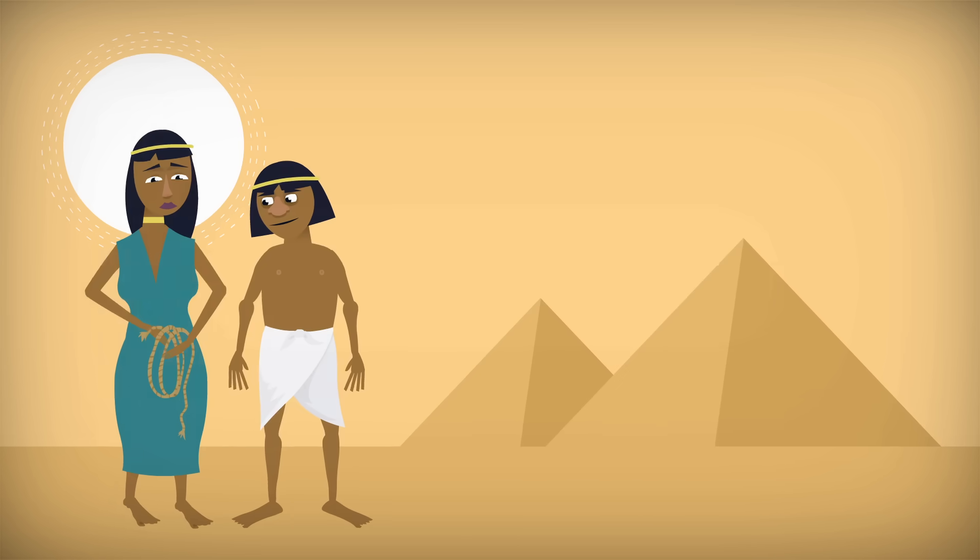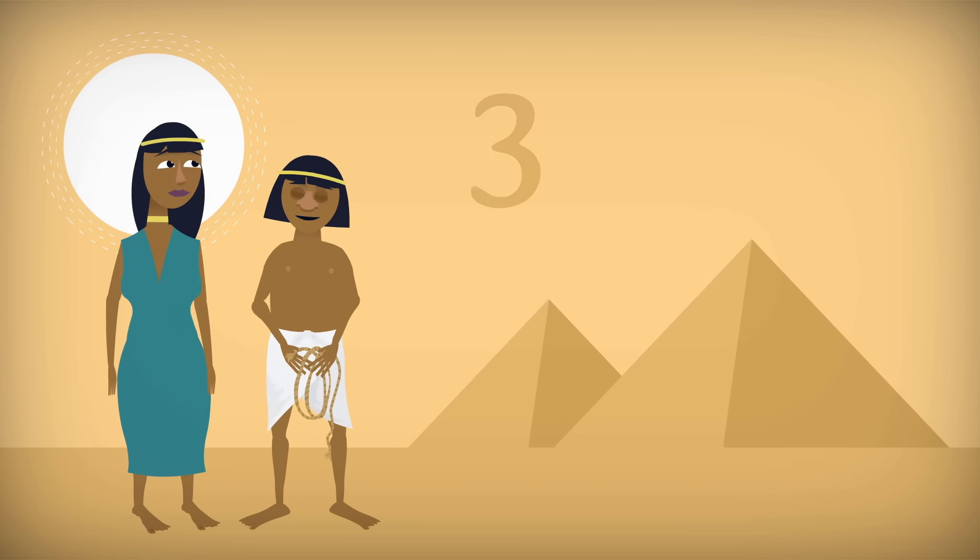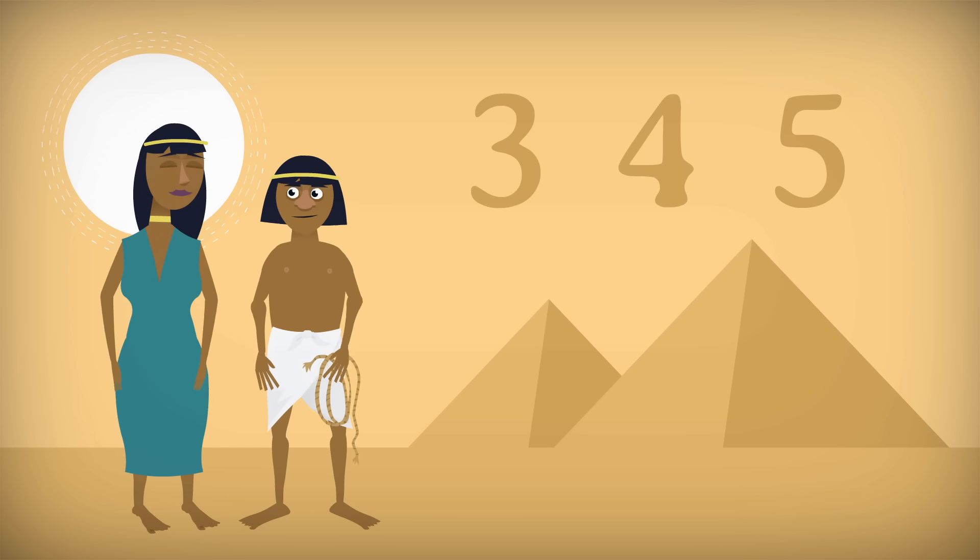Some historians speculate that ancient Egyptian surveyors used one such set of numbers, three, four, five, to make square corners.